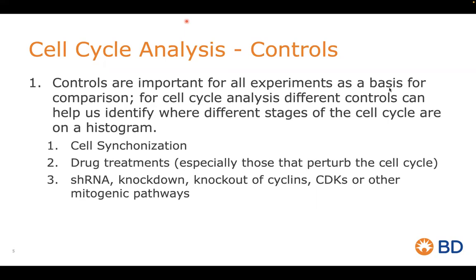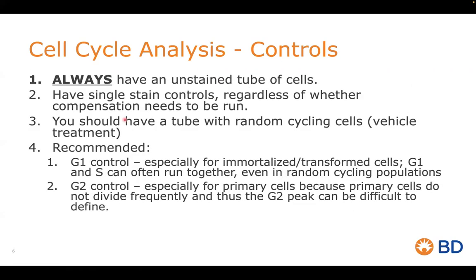There's a question here — can you name some of the markers for M phase or G0? Yes, Patricia, I'm going to mention these — I have a slide that covers some of the markers you're asking about and we'll get there very shortly. For controls, we always need an unstained tube of cells. You should also have single stain controls regardless of whether compensation needs to be run, and a tube with random cycling cells or vehicle-treated cells so you can see the normal distribution and compare it to treated conditions.